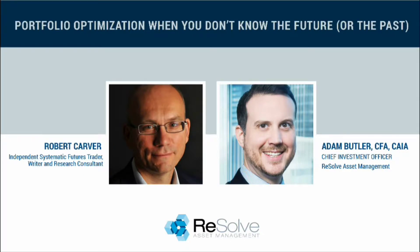Robert Carver is an independent systematic futures trader, writer, and research consultant, and is also currently a visiting lecturer at Queen Mary University of London. Formerly, Robert was head of fixed income and eventually a senior research fellow at Mann AHL. He's the author of Systematic Trading, a unique new method for designing trading and investing systems, and Smart Portfolios, a practical guide to building and maintaining intelligent investment portfolios. Robert has a bachelor's degree in economics from the University of Manchester and a master's degree also in economics from Birkbeck College, University of London. Now, without further ado, I'm going to pass it along to Rob to begin the presentation.